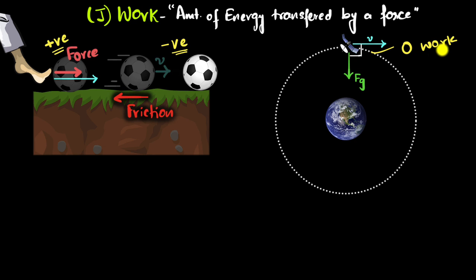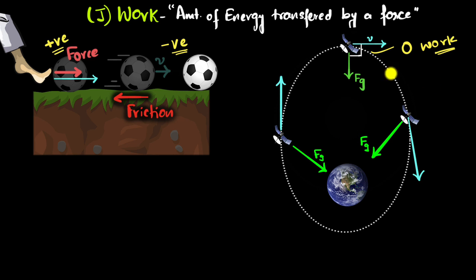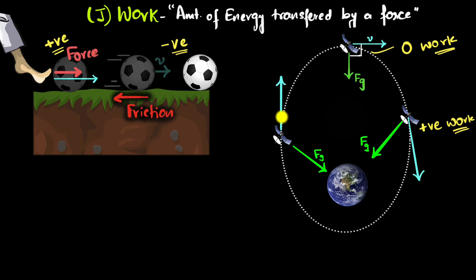However, if the orbit is not perfectly circular — in general, orbits are elliptical — we do see gravitational force doing work. At one point in the orbit, the force is somewhat in the direction of motion, so it does positive work, and the kinetic energy increases as the object comes closer and speeds up. As it moves away, the force is somewhat in the opposite direction, doing negative work, removing kinetic energy, so the speed decreases as it travels farther away.